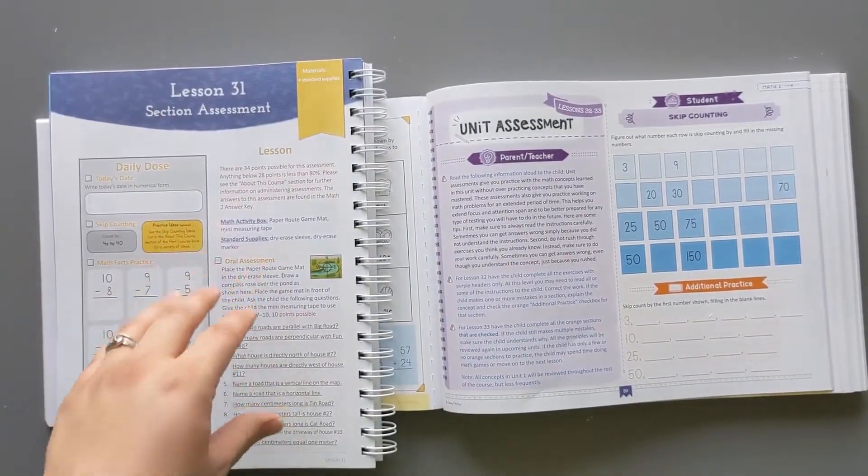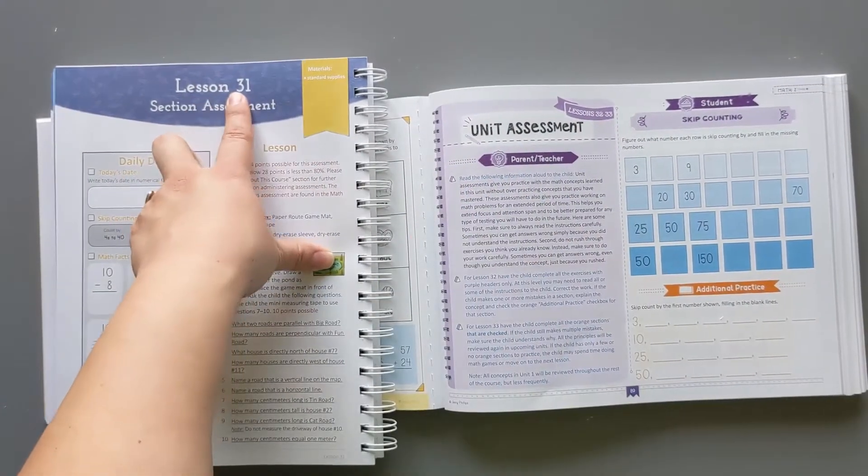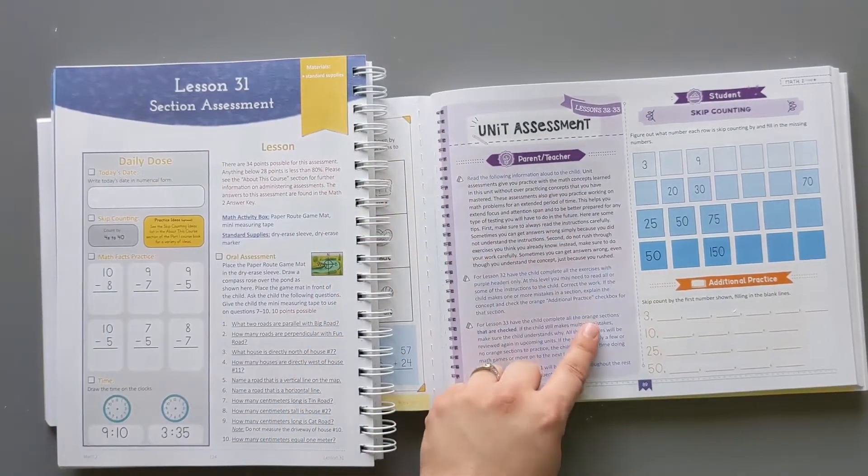Honestly I don't mind the layout because it makes it feel less like an assessment for the child. Just feels like another lesson to them. They're just doing a different thing. This says it's for lessons 32 and 33 where this other one is just lesson 31.